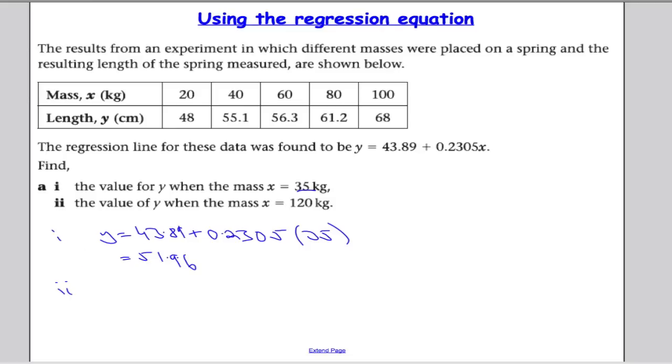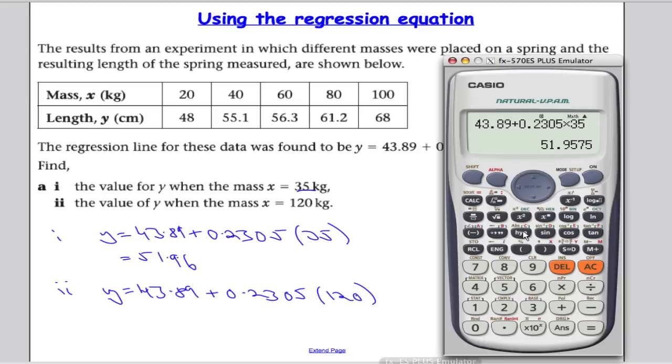And then we can do the same, that's part 1. We can do the same for part 2. So find the value of y when x equals 120. So the same again, 43.89 plus 0.2305 times by 120. Let's just go back to the question and change this. So now we're putting in 120. Again, we get an answer of 71.55.